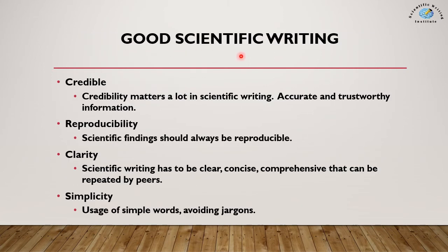There are certain core values of good scientific writing. First, scientific writing has to be credible — you must provide accurate and trustworthy information. Linked with credibility is reproducibility: scientific findings should always be reproducible. If you have done an experiment in North America, someone in the Middle East should also be able to reproduce your findings. That is a mark of both good scientific writing and good scientific research.